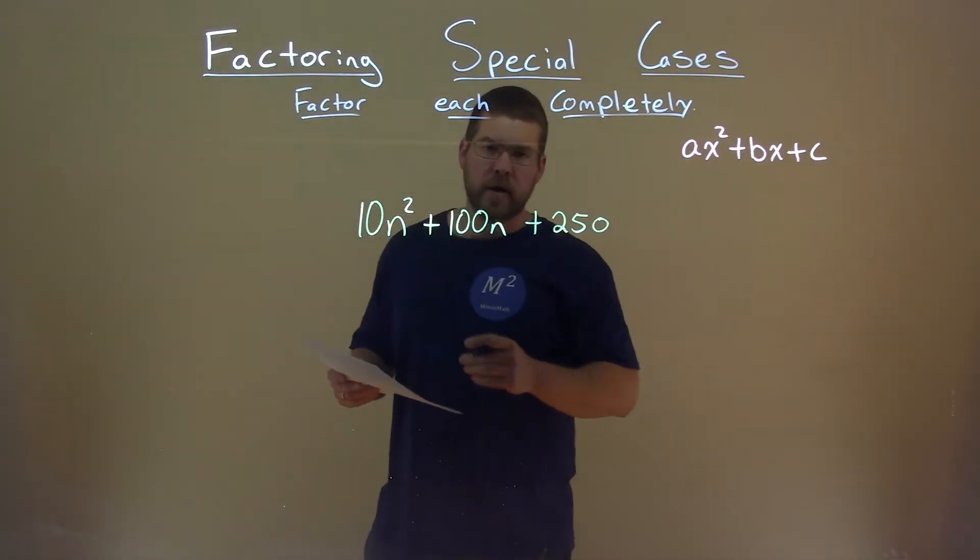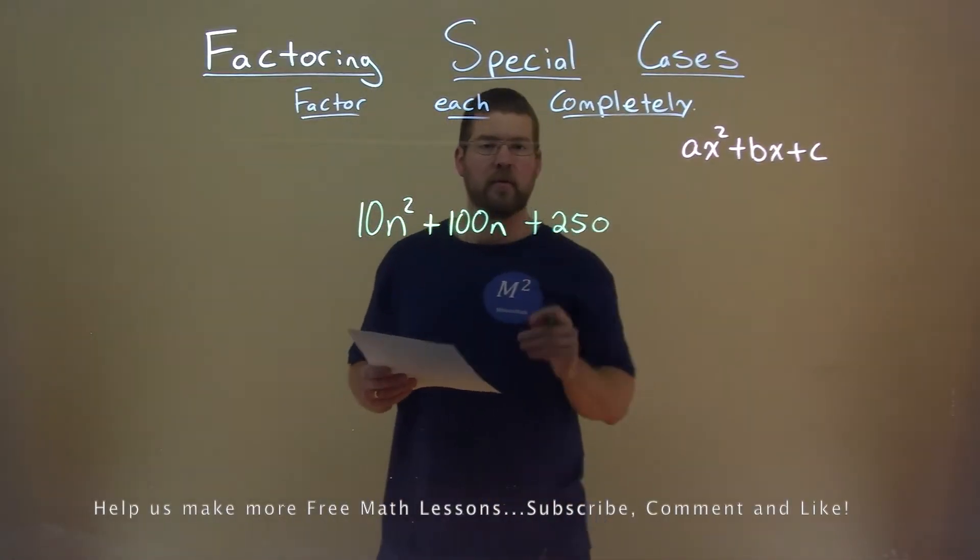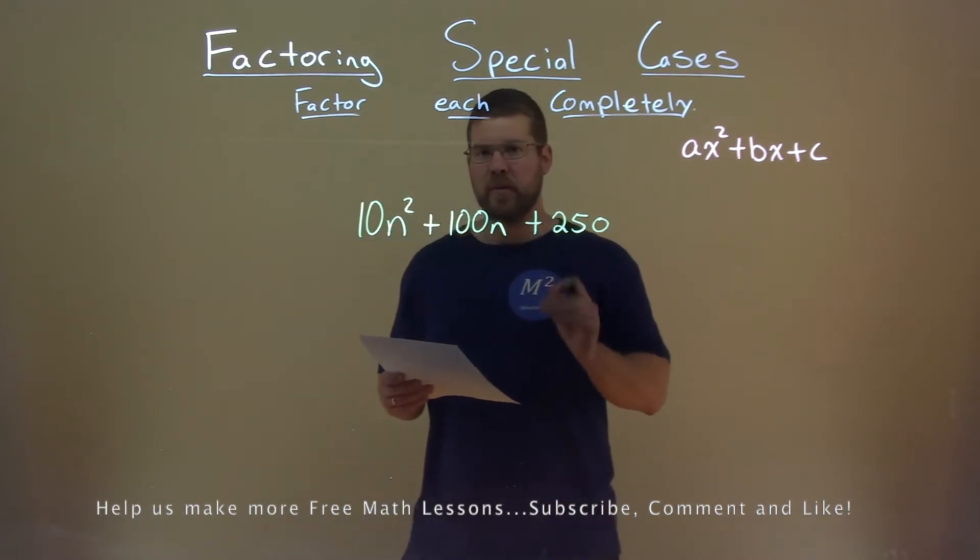We're given this problem right here: 10n squared plus 100n plus 250, and we want to factor this completely.